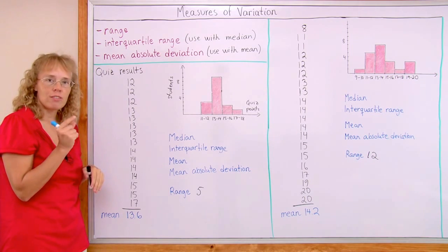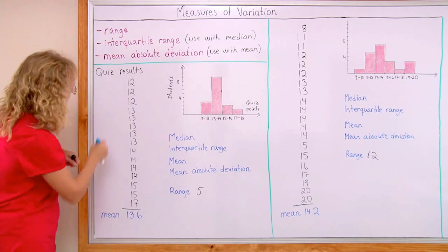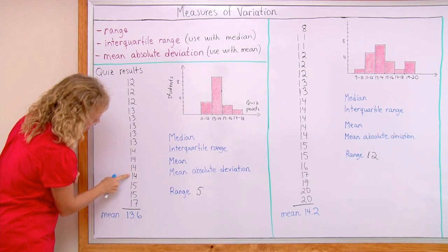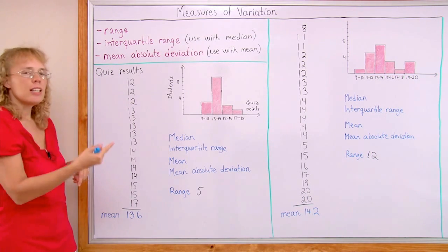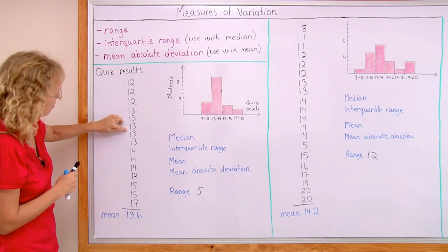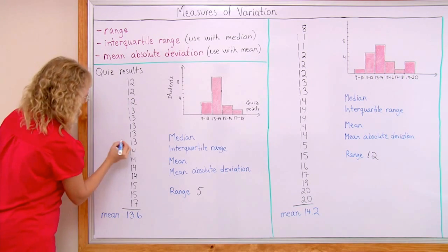To find the median, that's the middlemost number, right? Or if there's an even number of values, then I take the average of the two middlemost items here. So that's 1, 2, 3, 4, 5, 6, 7, 8, 9, 10, 11, 12, 13, 14, 15. So that means the eighth item here is my median.